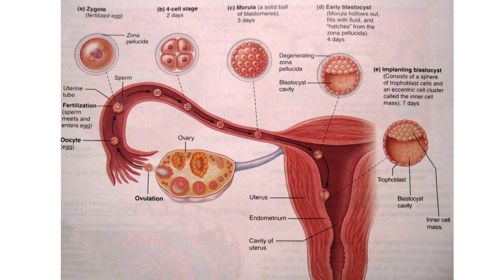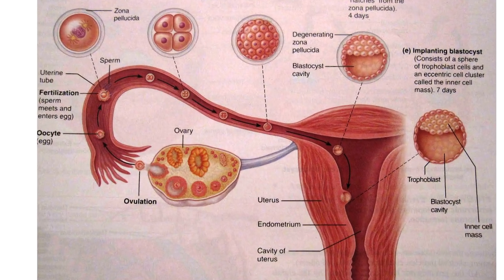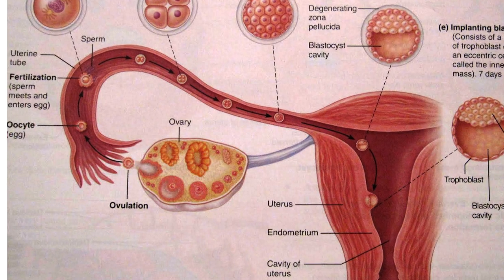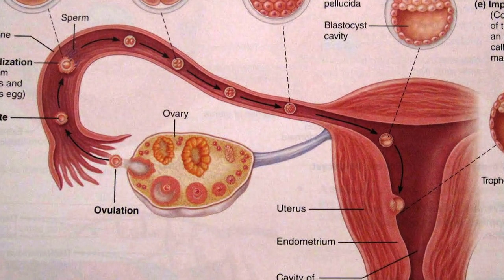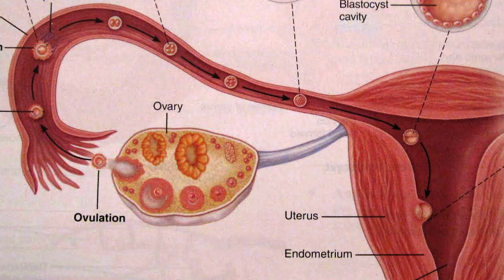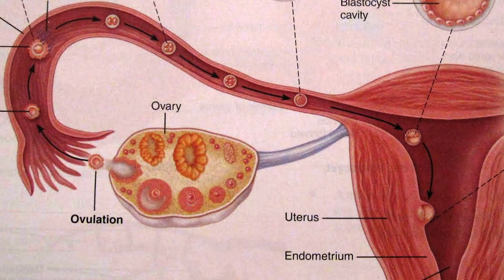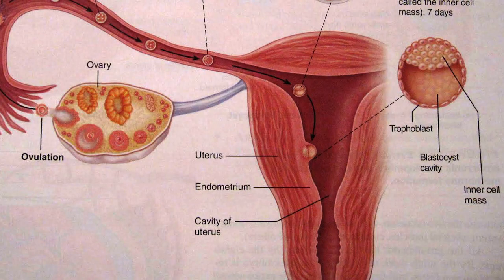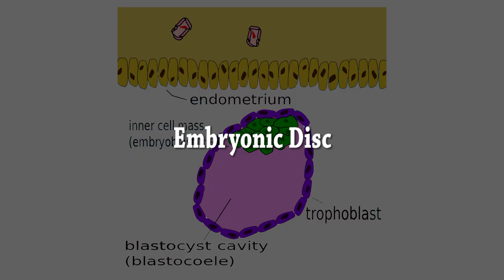During the process of implantation, the endometrial lining of the uterus becomes transformed into a secretory lining in preparation for accepting the embryo. It becomes thickened, with its secretory glands becoming elongated and increasingly vascular. The trophoblast layer of the blastocyst implants in the wall of the uterus.